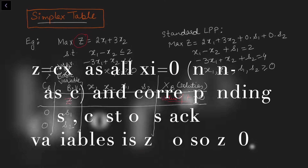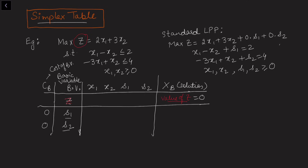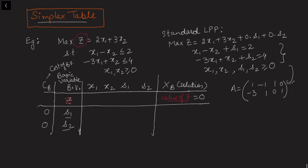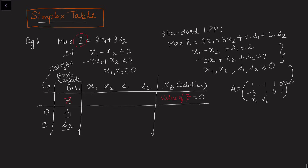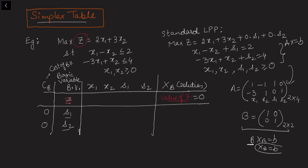When we write the basic variables from the problem, the current A matrix is: row 1 = [1, -1, 1, 0] and row 2 = [-3, 1, 0, 1], corresponding to columns x1, x2, s1, s2. The order of the matrix is 2×4, so in the basis matrix we can consider any two columns. Currently we choose the 2×2 identity as the basis matrix. Since Ax = b reduces to B·xB = b and B is identity, xB is directly the right-hand side, giving the initial BFS as s1 = 2, s2 = 4.